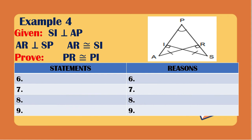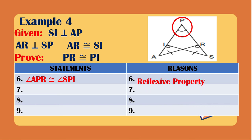For the sixth statement, looking at the illustration, the angle shared by both triangles is angle P. For distinction we use three letters: angle APR is congruent to angle SPI, and the reason is reflexive property. For the seventh statement, we use the last given: AR is congruent to SI, and the reason is given.